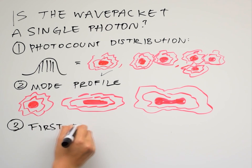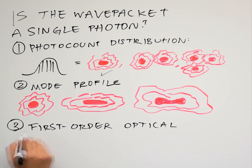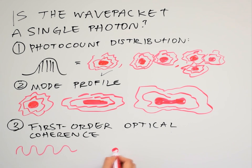Three, the first-order optical coherence. Think of this metric as describing how wave-like the photon is, and how it interferes with other photons.